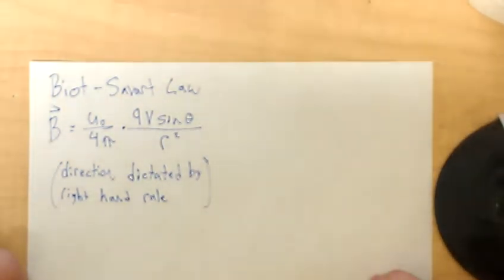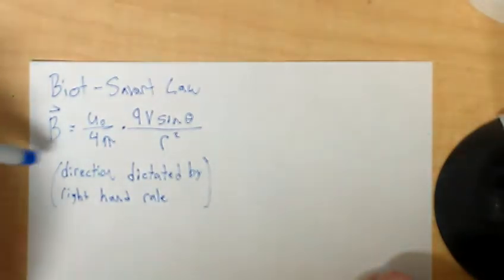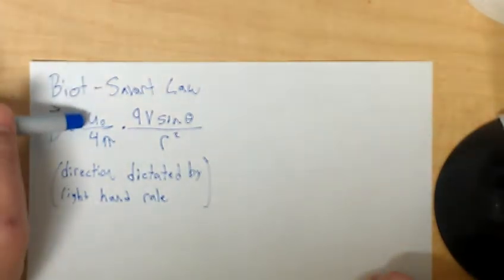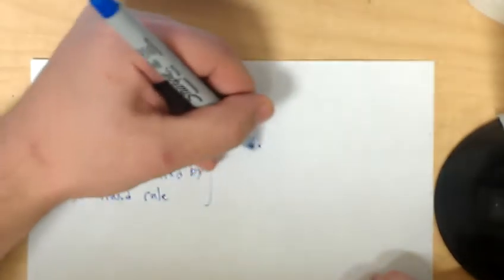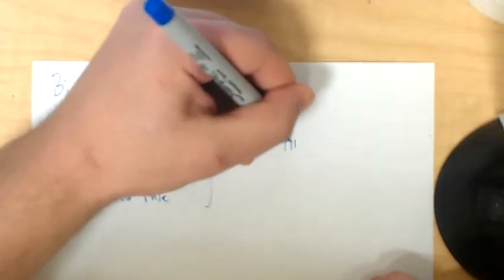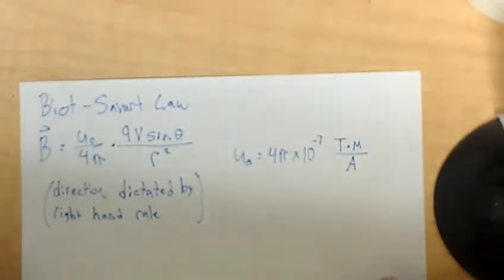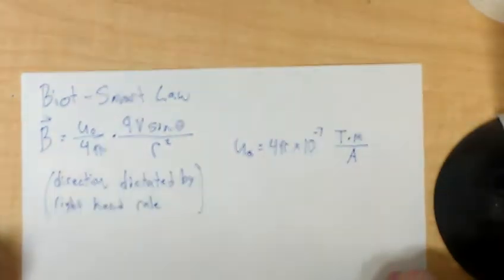Let's go through the variables and say what they all mean. So, this u-naught isn't a variable, it's a constant. U-naught is 4 pi times 10 to the negative 7th teslas times meters over amperes. That's u-naught, it's just a constant.